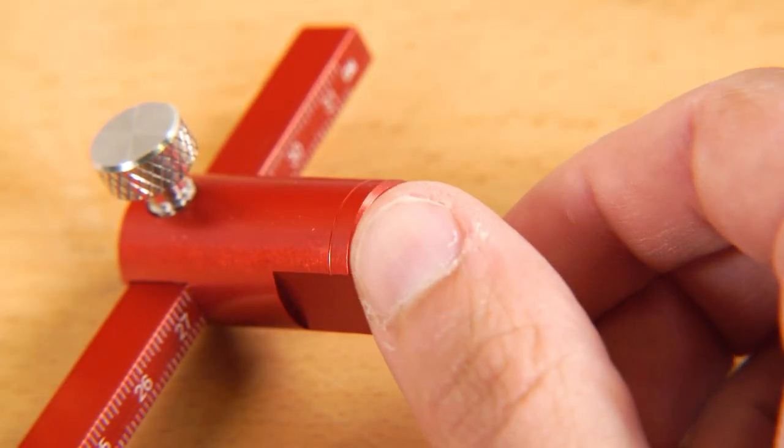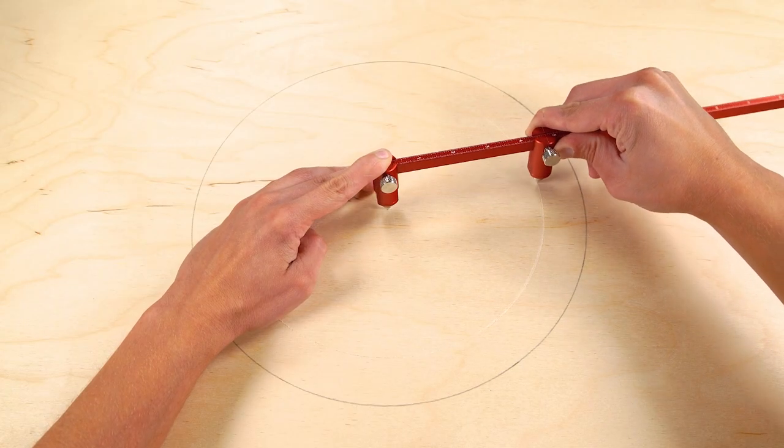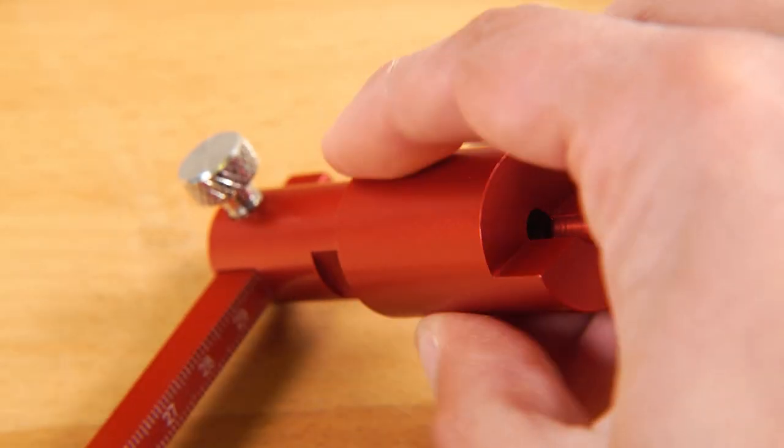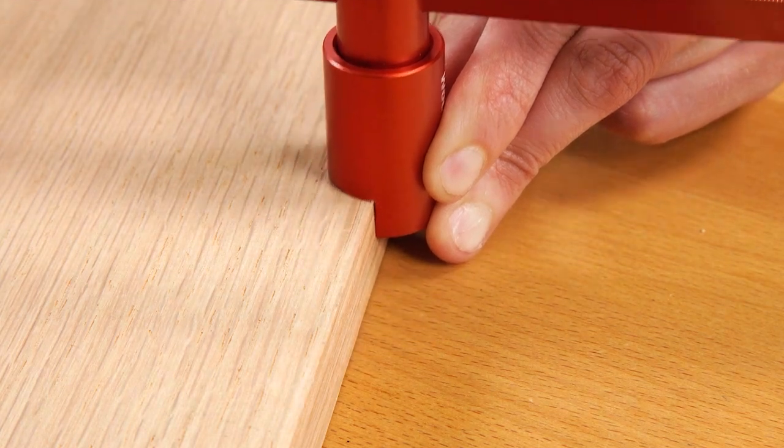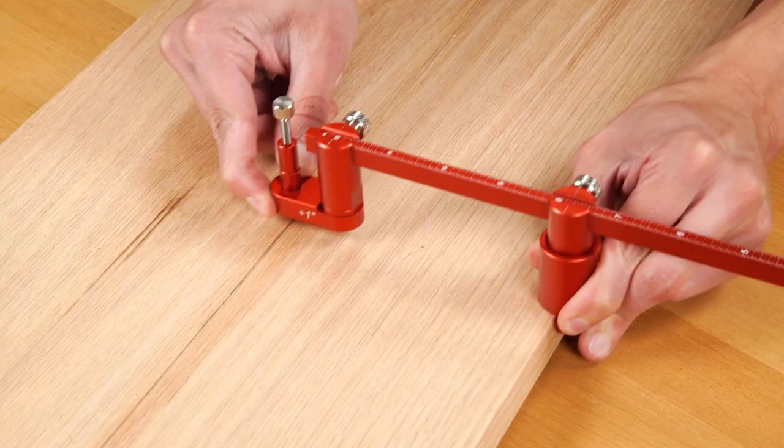The sharp scribe pins thread in for a traditional trammel point use. The edge gauge attachments have a machine flat section that reference stock edges when drawing or scribing.